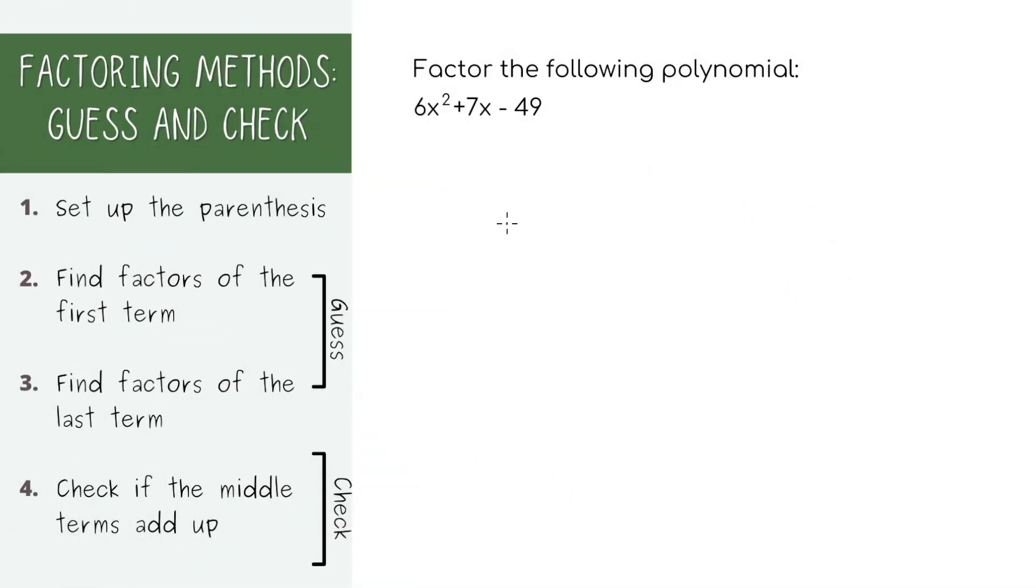Usually for polynomials with three terms like this, I'll use the guess and check method. Let's first set up the basic structure of our answer. I know that the answer will look something like this with two parentheses, and we can start filling out the terms on the inside.